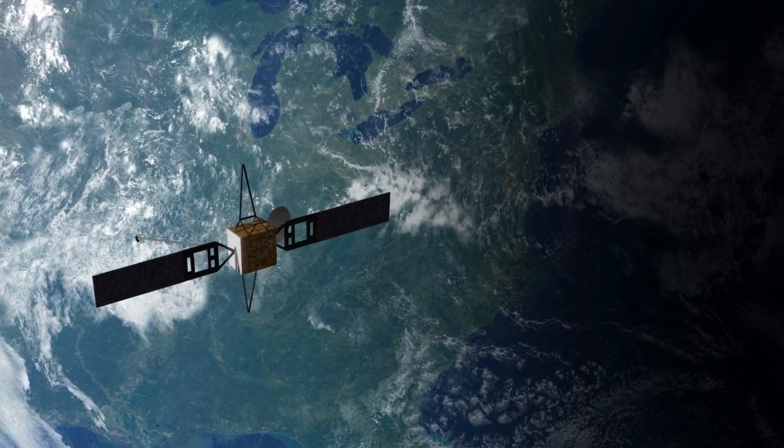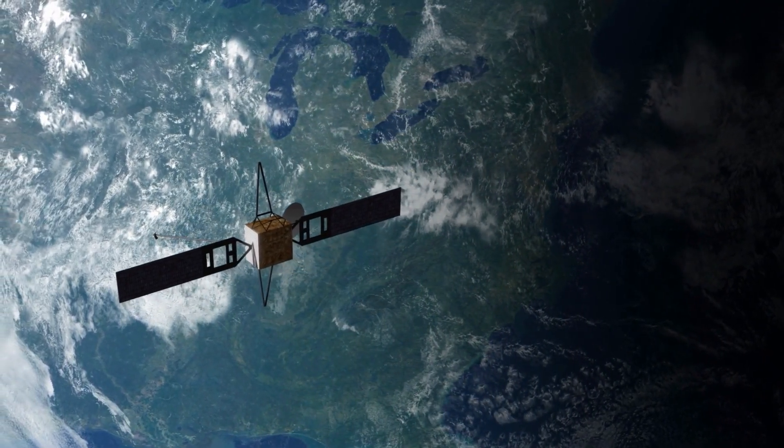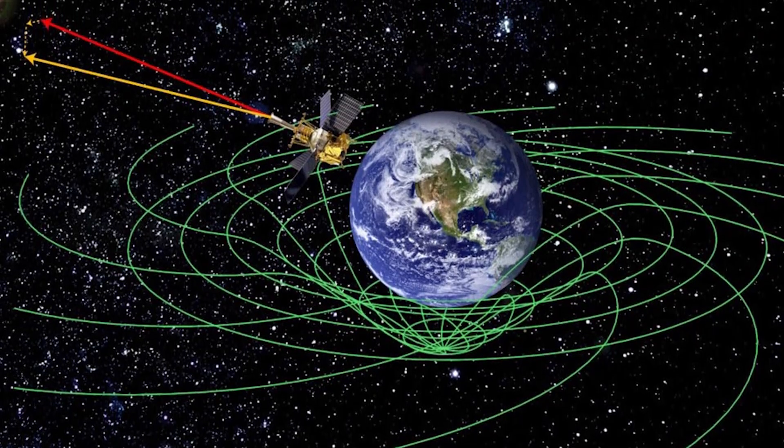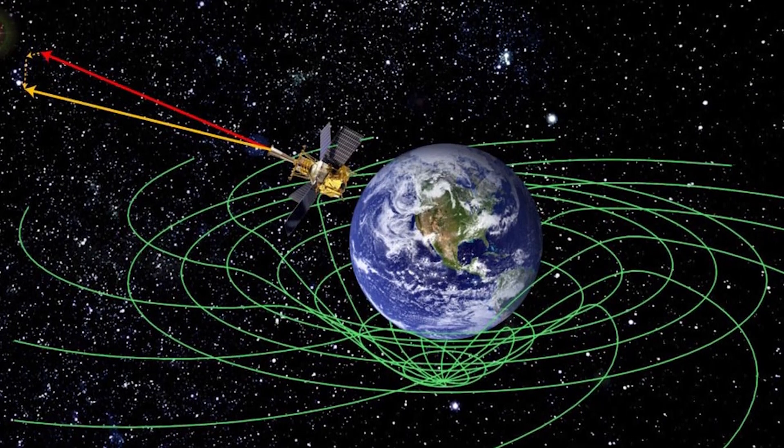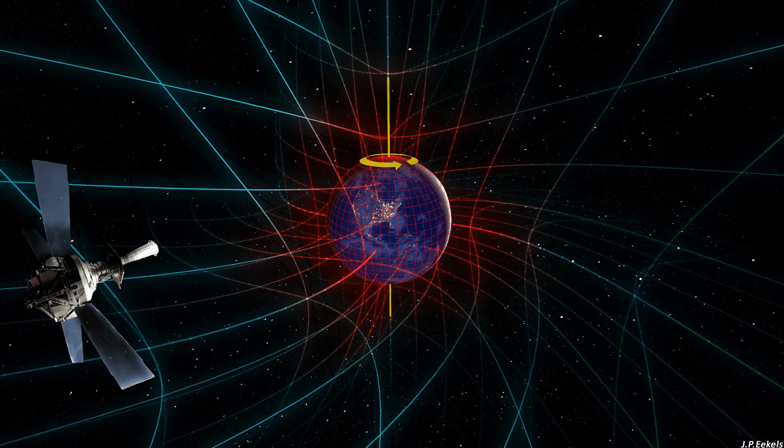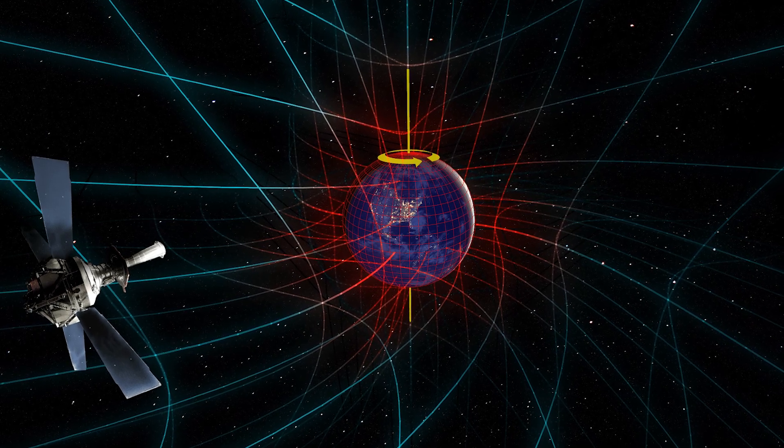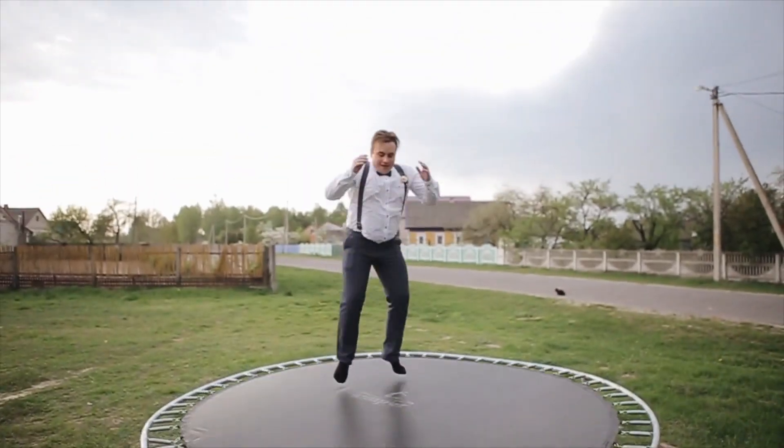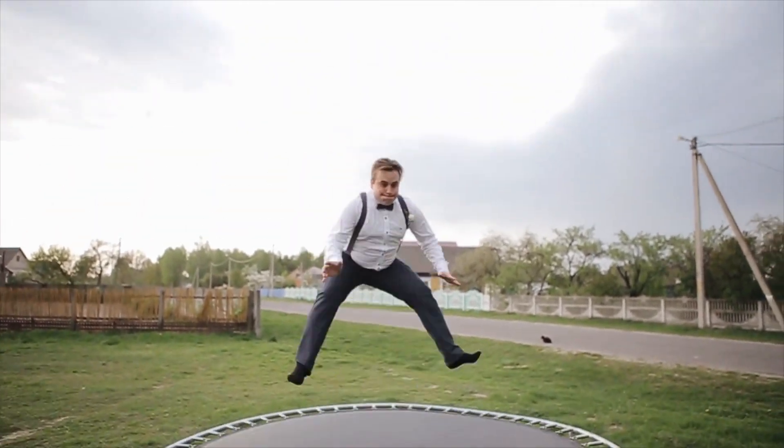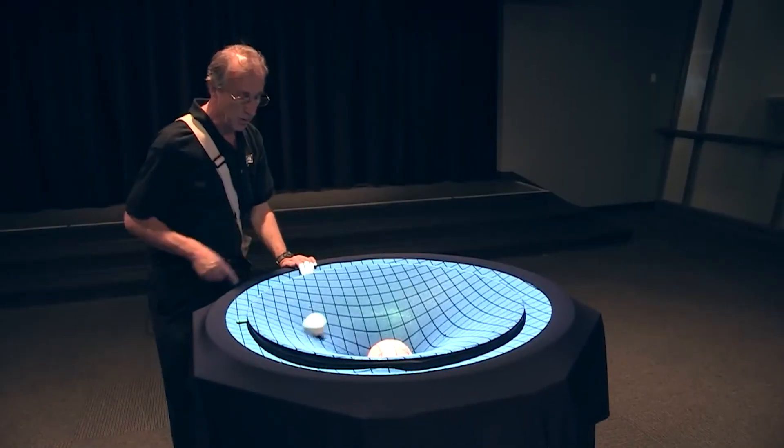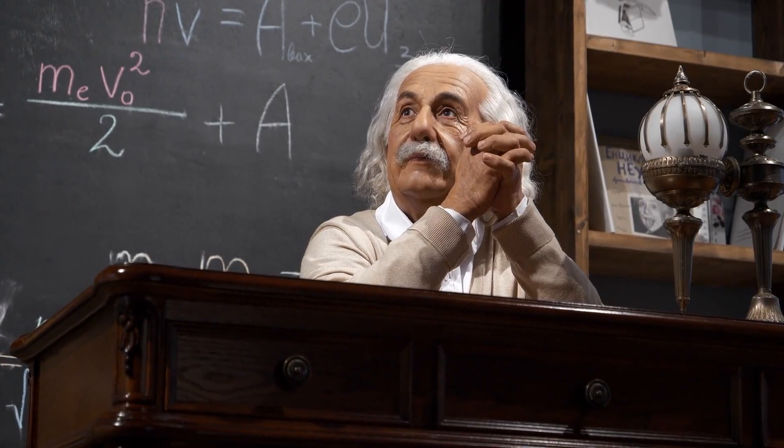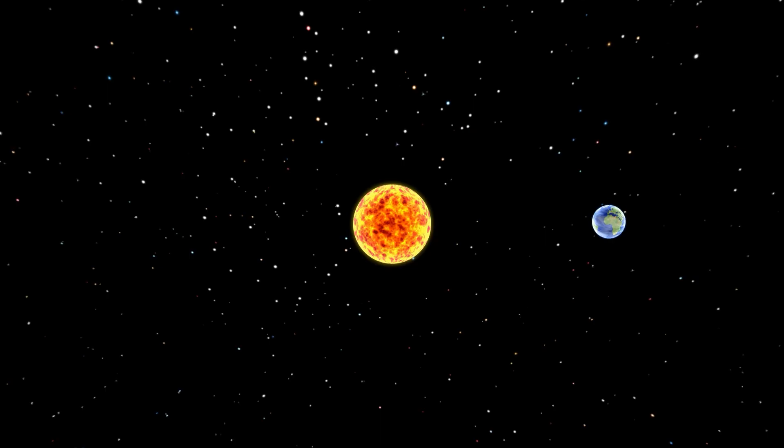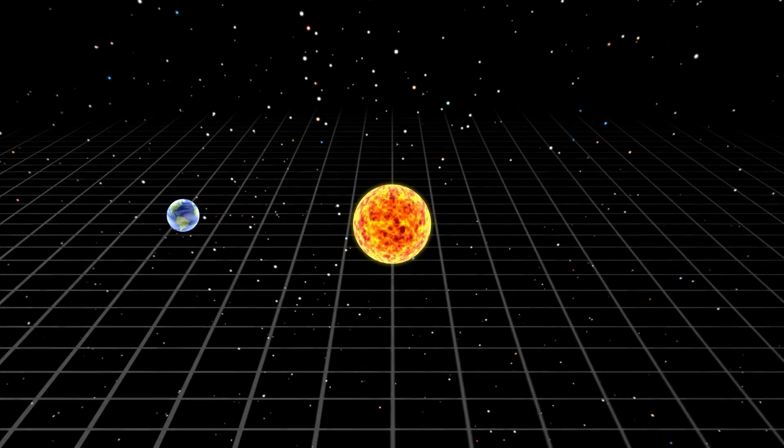Now, if something else like a satellite comes by, it rolls towards the planet not because the planet is pulling it, but because the sheet is curved and that's the path it naturally takes. This bending is what we call gravity. It's like when you jump on a trampoline and everything sort of moves towards the middle. Einstein's theory tells us that gravity isn't just an invisible force pulling things together, but it's about how big objects bend the space around them.